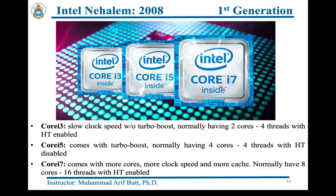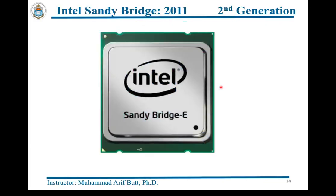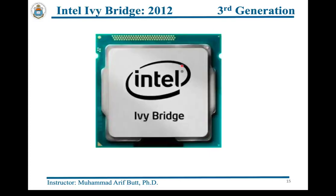The Intel first generation processor came in Core i3, Core i5, and Core i7. The second generation Sandy Bridge was launched in 2011 and, along with other features, introduced a new SIMD technology called Advanced Vector Extension, or AVX. In 2012 Intel launched Ivy Bridge, the third generation processor. Ivy Bridge processors are faster than Sandy Bridge, consume 50% less energy, and give 25% improved performance, though they emit more heat.